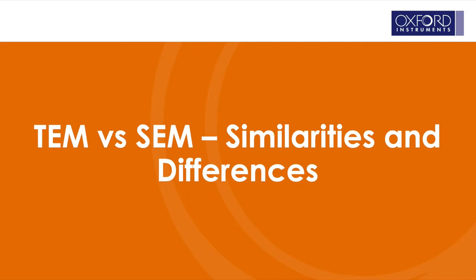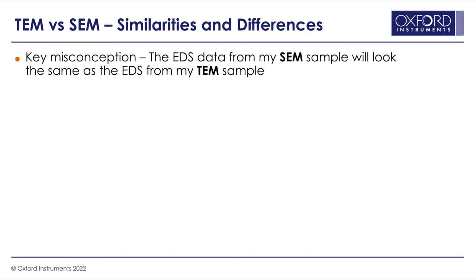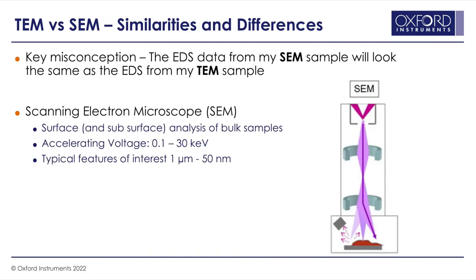TEM versus SEM — what's the same, what's different, what does it mean? A key misconception is that EDS data from an SEM will look very similar to EDS data from a TEM, though the technique is the same, this typically isn't true. A scanning electron microscope is a surface or subsurface analysis technique that looks at bulk samples, with an accelerating voltage of about 0.1 to 30 kV. The features of interest are probably going to be in the micron range, down to the nanoscale, but not typically anything smaller than 50 nanometers.